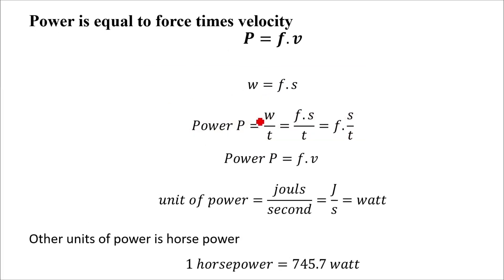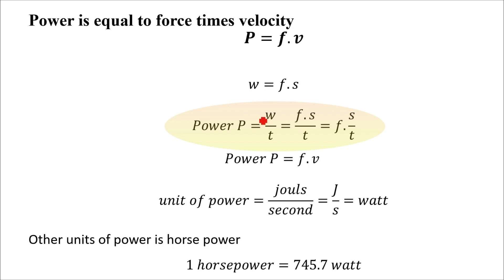We also know that the power P is equal to work done per unit time, or work done divided by time. Substituting the value of work done f dot s in this equation, we will get f dot s divided by t.